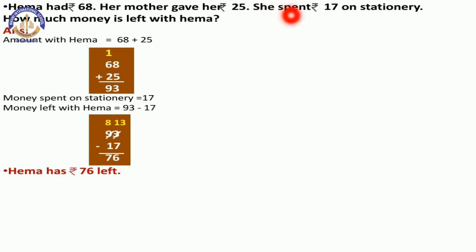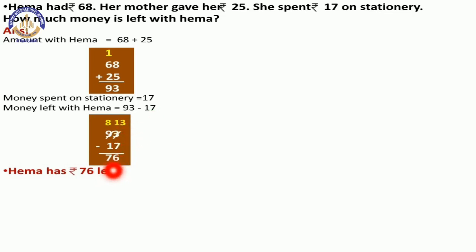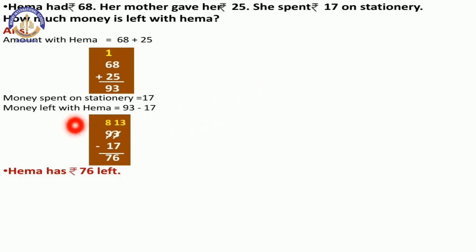Next, she spent Rs.17 on stationery. So we had Rs.93, and Rs.17 was spent on stationery. So Rs.93 minus Rs.17 — we have to do subtraction and we get the answer 76. I already explained these word problems in our subtraction chapter. This is revision, so you have to write all these things in your answer in exam.